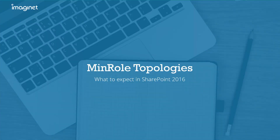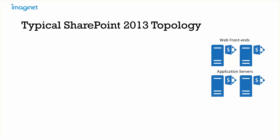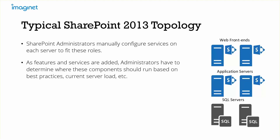Now we'll talk about the topology changes MinRole introduces in a SharePoint 2016 environment. In a typical SharePoint 2013 topology, you'd have a pair of web front ends in a load-balanced set, two application servers — one running central admin and search, and another possibly running user profile service — and then SQL servers possibly in an always-on availability group. SharePoint administrators would manually configure services on each server to fit these roles, and as features and services were added, admins had to determine where components should run based on best practices, current server load, etc.